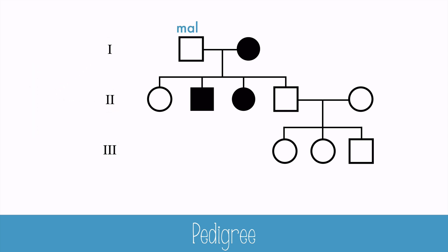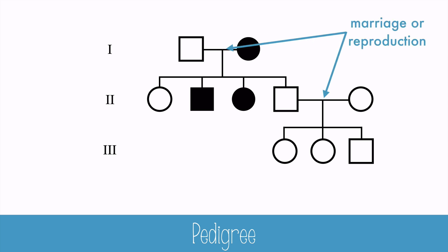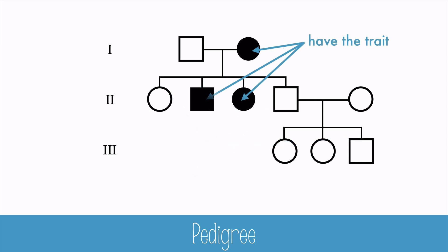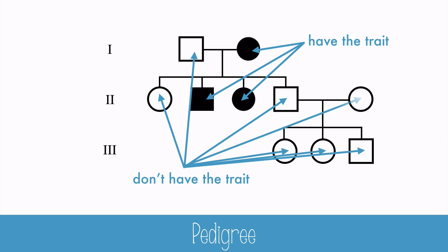Each square represents a male, and the circles represent females. A central line connecting a male and a female shows either a marriage or that they've produced children. Lines that lead to the tops of circles and squares show the children of the people who have mated. A shaded square or circle means that they have the trait we're tracking, and an unshaded square or circle means that they do not have the trait.